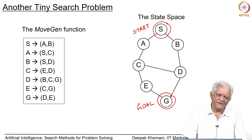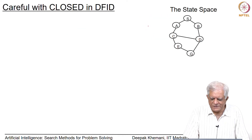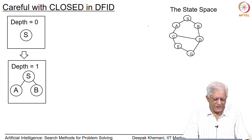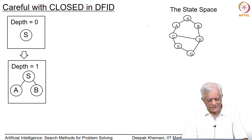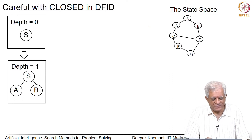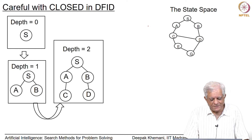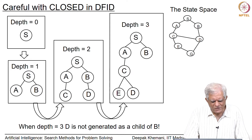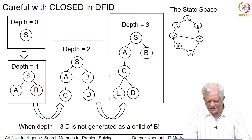What does DFID do? It does a sequence of searches. In the first cycle, where depth is equal to 0, it only looks at the start node. In the second cycle, where depth is equal to 1, it goes down one level and looks at paths of length 1. In the third cycle, when depth becomes 2, it does DFID and looks at paths of length 2. In the fourth cycle, it looks at depth 3 and looks at paths of length 3.